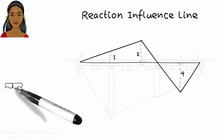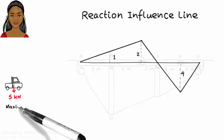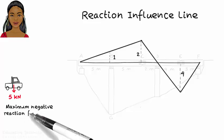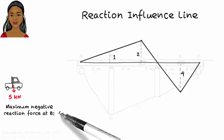For example, if the moving vehicle exerts a force of five kilonewtons on the bridge, then maximum negative reaction force at B equals four times five, or twenty kilonewtons.